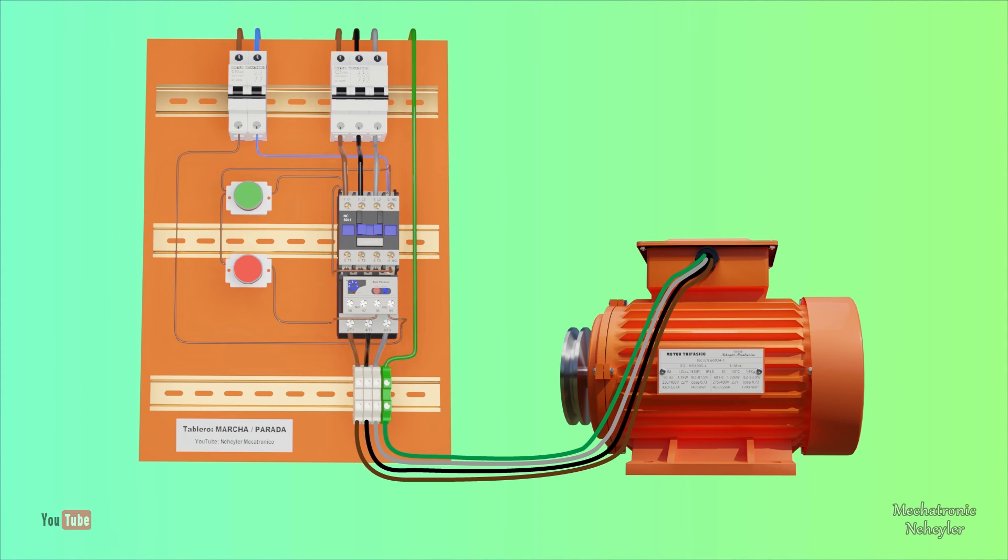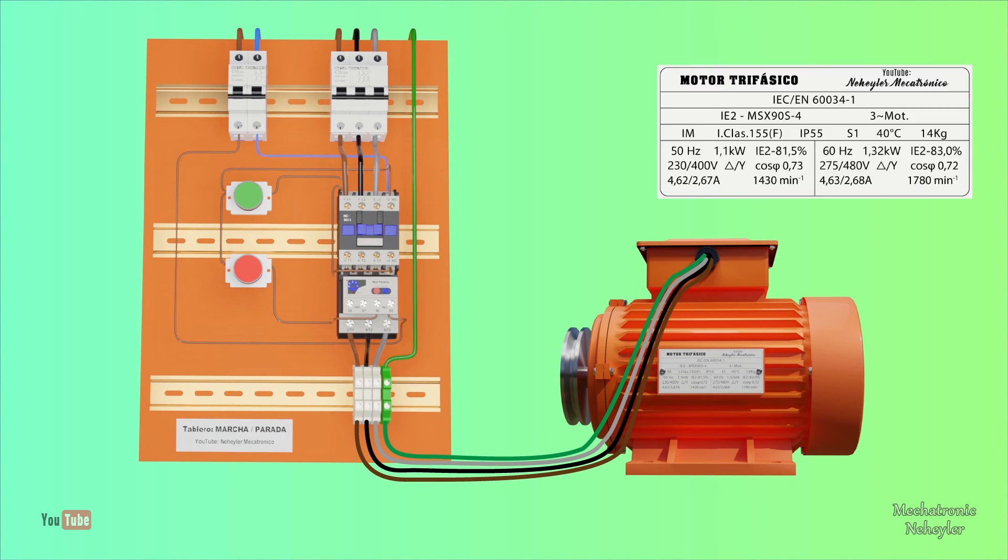Some of you are wondering what nominal current values the elements that make up the electric motor board should have. And well, that will depend on the power of the motor. For this example, we have the data plate of the motor.